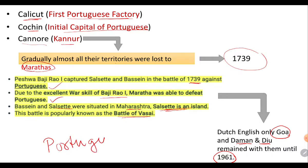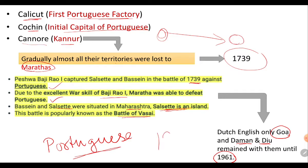The Portuguese were the first European company to come to India, arriving in 1498, and they were also the last to leave, staying until 1961 — even after the French, Dutch, Danish, and British had gone. The British left in 1947, and their company wound down by 1956, making the Portuguese the last European power to leave India.